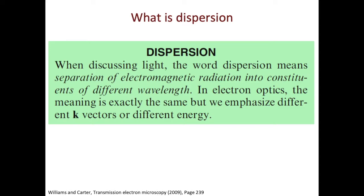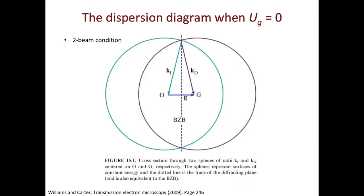From previous videos, we learned that in diffraction, it's elastic scattering, so there's no change in energy. Therefore, what we see in dispersion is really from the different k-vectors. In the two-beam condition, we have the incident k-vector that's ki, as well as the diffraction k-vector that's kd.